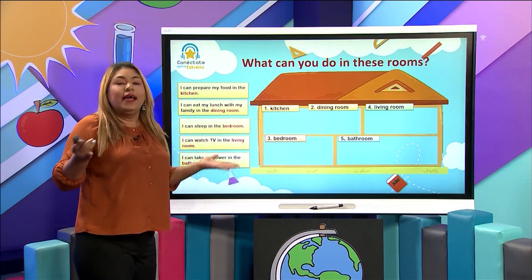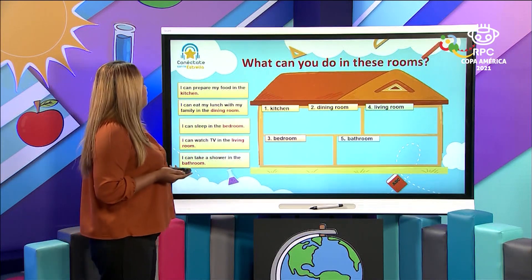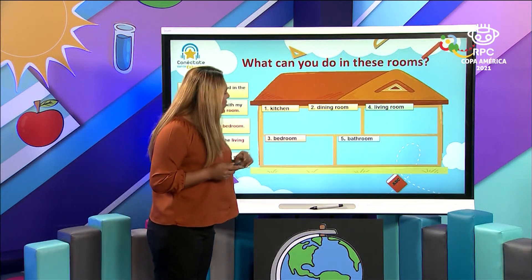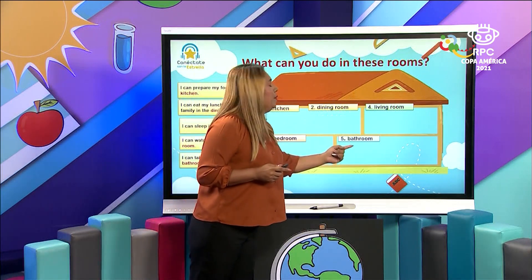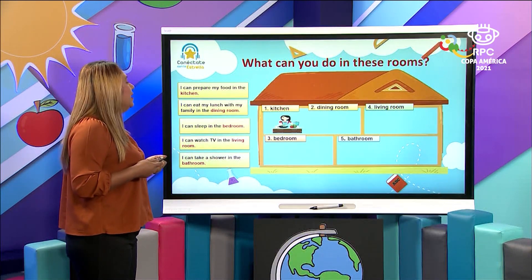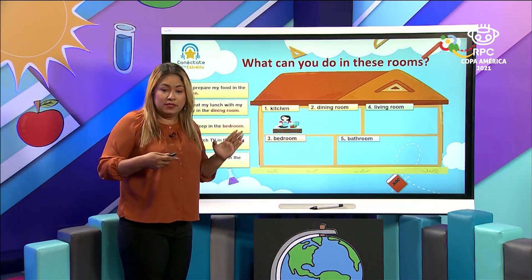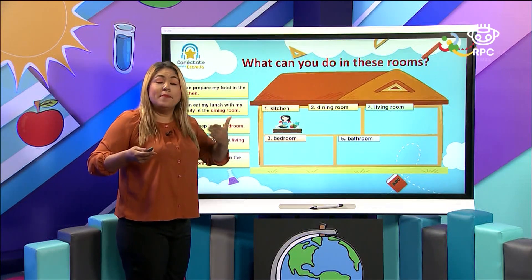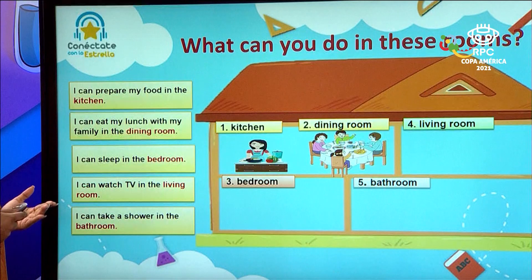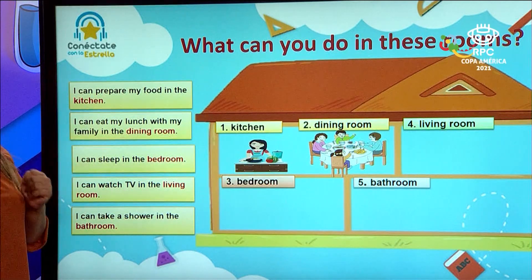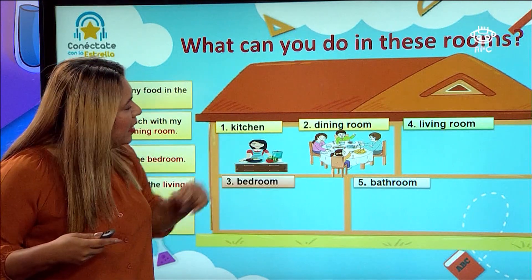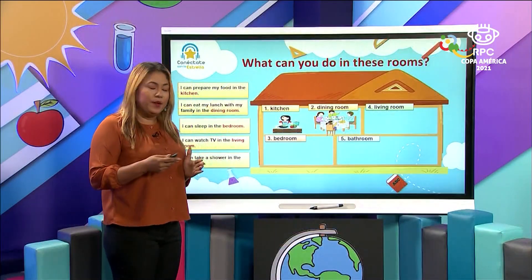Now, what can you do in the different rooms? We have the kitchen, the dining room, the bedroom, the living room, and the bathroom. Number one: I can prepare my food in the kitchen. In the dining room, I can eat my lunch with my family. There are the members of the family — the mother, the father, the brother, and the sister. They are all sharing dinner.